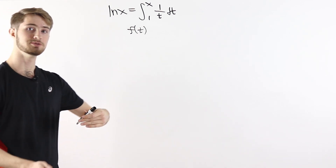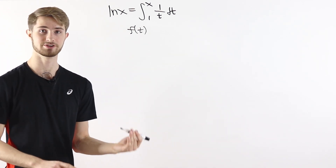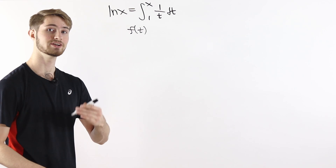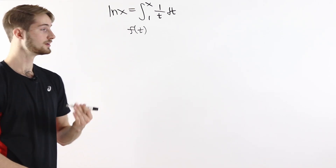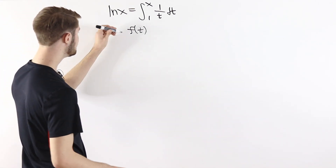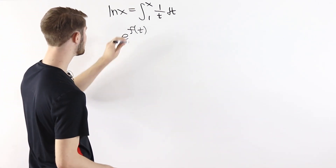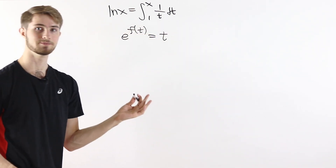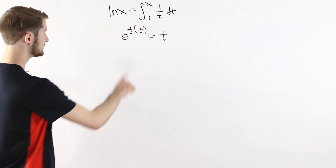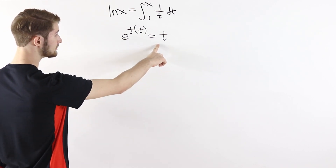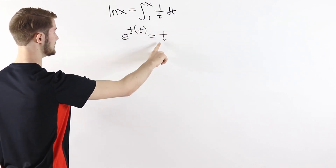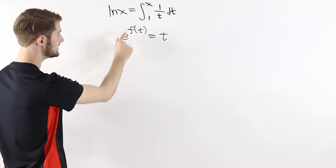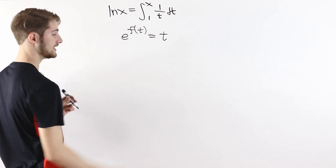What does it mean for a function to be the inverse of e to the x? In particular, I'm going to consider a right inverse. What that means is that if we take e to the power of f of t, then that has to equal t. So we first apply f, and afterwards we take e to the power of that result.